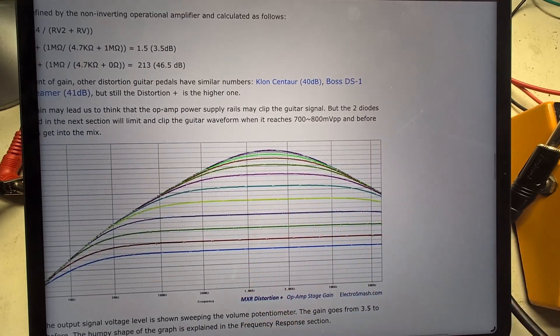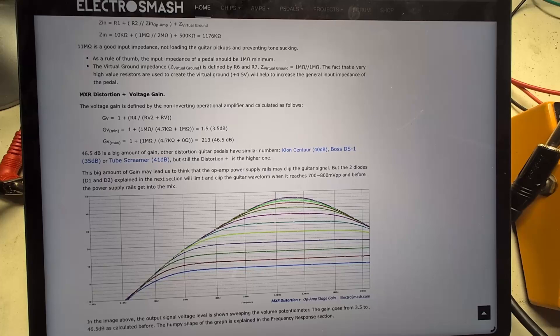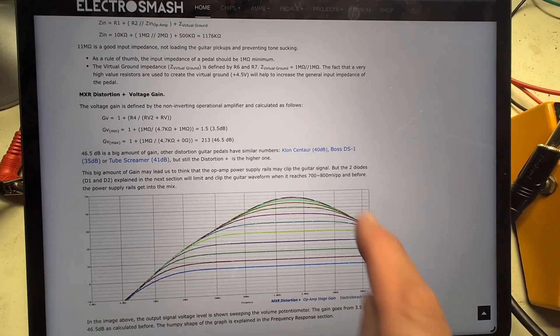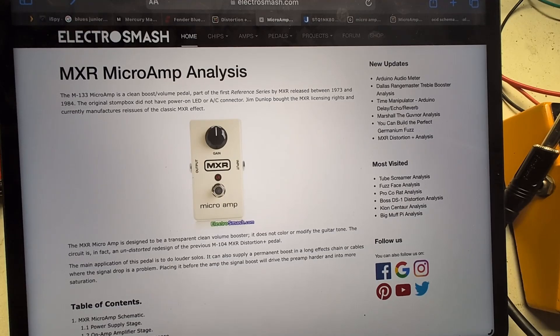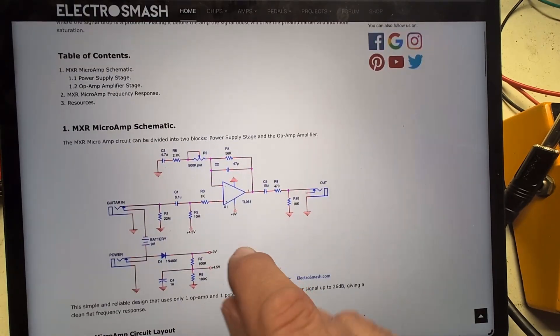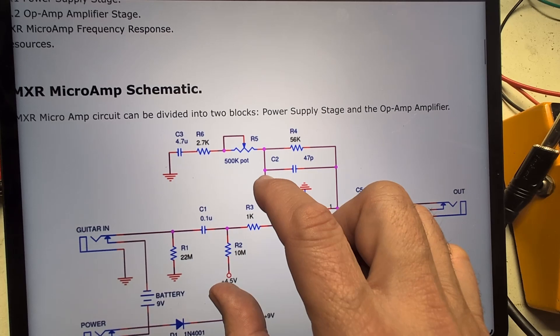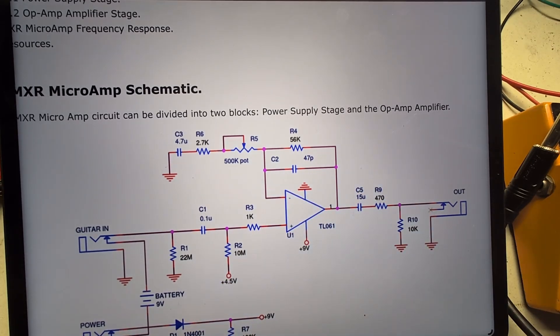So one of the first things that we have to do with the microamp is be able to switch the capacitors that define the tone, and do a couple of frequency response tests and see if we're achieving something in this ballpark of tone. Going back to the electrosmash analysis of the microamp and scrolling down here to the schematic, there's three things that we want to do. First of all, we want to change the frequency response of the pedal and be able to switch that between microamp frequency response and Distortion Plus.